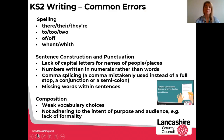In terms of sentence construction, we've seen some basics that should have been taught in previous year groups: lack of capital letters for names of people or places; numbers written in numerals rather than words; comma splicing — a comma mistakenly used instead of a full stop, a conjunction or a semicolon; and words omitted within sentences because children aren't going back and rereading to make sure they make sense. In terms of composition, we've seen weak vocabulary choices and children not sticking to the intent of purpose and audience — so the vocabulary isn't relevant for the outcome, or there's a lack of formality.